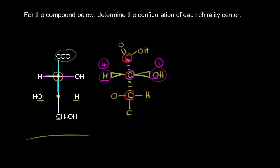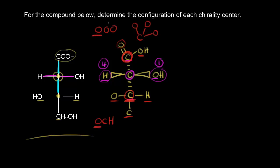To break the tie, we look at the atoms directly bonded to those carbons. The bottom carbon is directly bonded to an oxygen, a carbon, and a hydrogen — in order of decreasing atomic number: oxygen, carbon, hydrogen. The top carbon, the one in our carboxylic acid, has a double bond to an oxygen, which we treat as two bonds to two different oxygens, plus another bond to an oxygen on the right. So for the purposes of assigning configuration, that's oxygen, oxygen, oxygen. Comparing: oxygen versus oxygen is a tie; next is oxygen versus carbon, and oxygen wins. So the carboxylic acid group gets higher priority — number two — and the bottom group is number three.